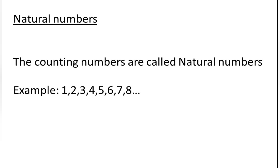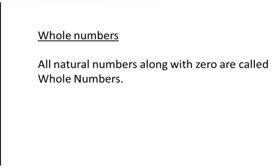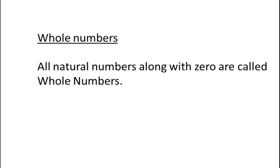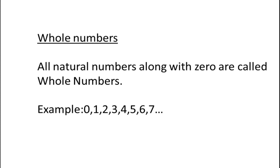Natural numbers are 1, 2, 3, 4, 5, 6 and so on. Next, what are whole numbers? Whole numbers are all natural numbers along with zero. So whole numbers include zero, but natural numbers do not include zero. Zero along with natural numbers — the counting numbers 1, 2, 3, 4, 5, 6 — are called whole numbers.